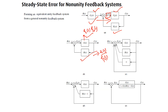Unlike the unity feedback system where the error is the difference between the input and the output, in a non-unity feedback system we cannot say error is simply the difference between input and output. So for this case we call the signal at the output of the summing junction the actuating signal.